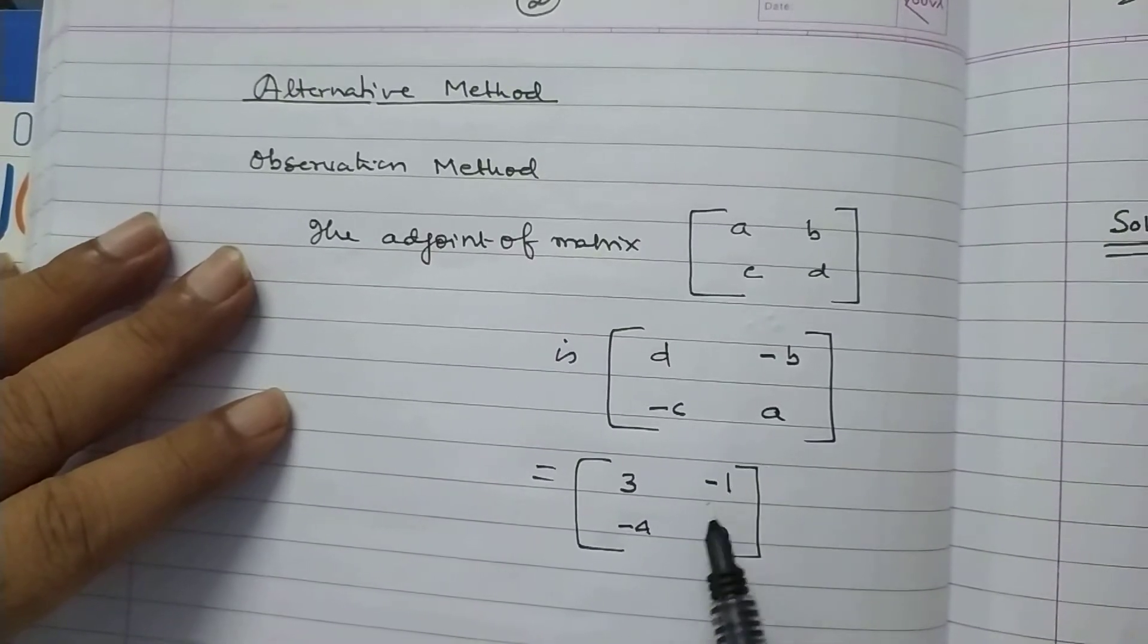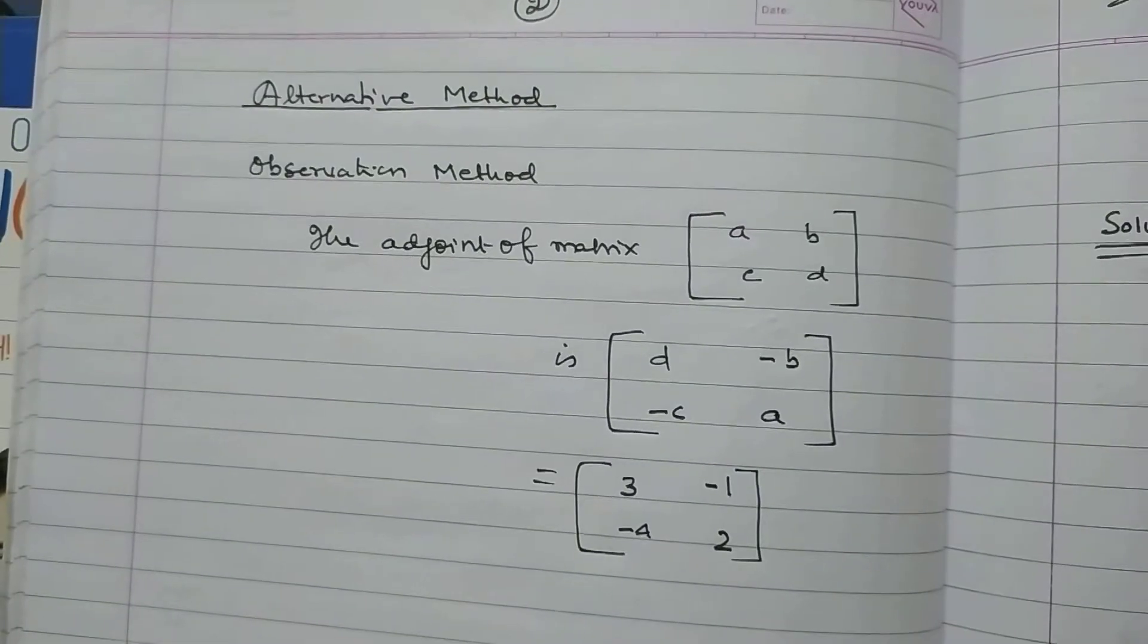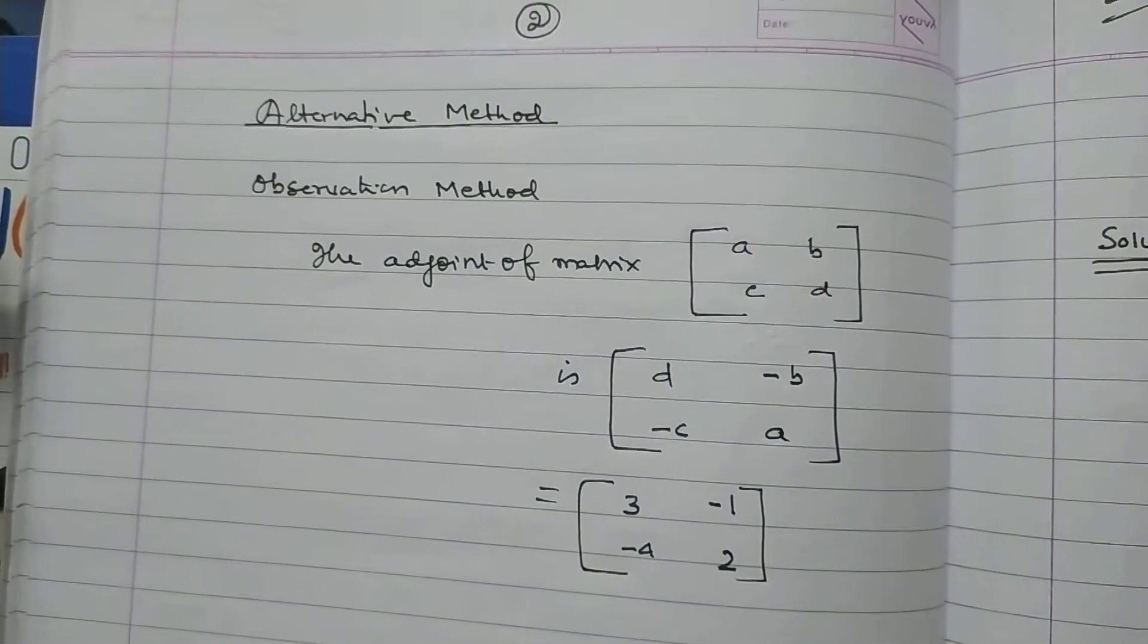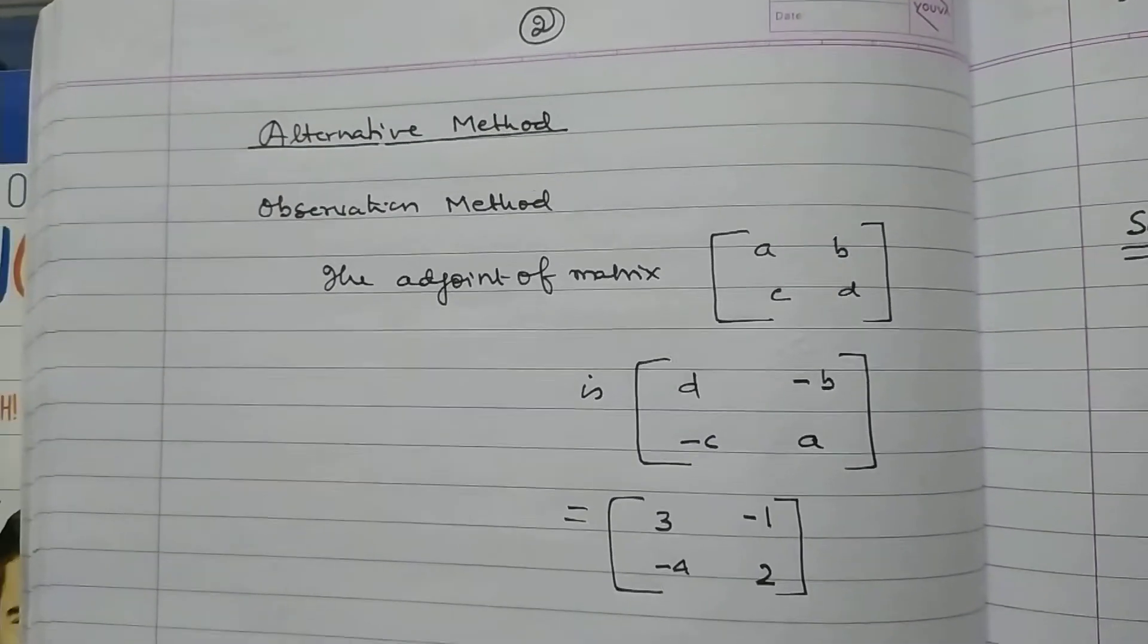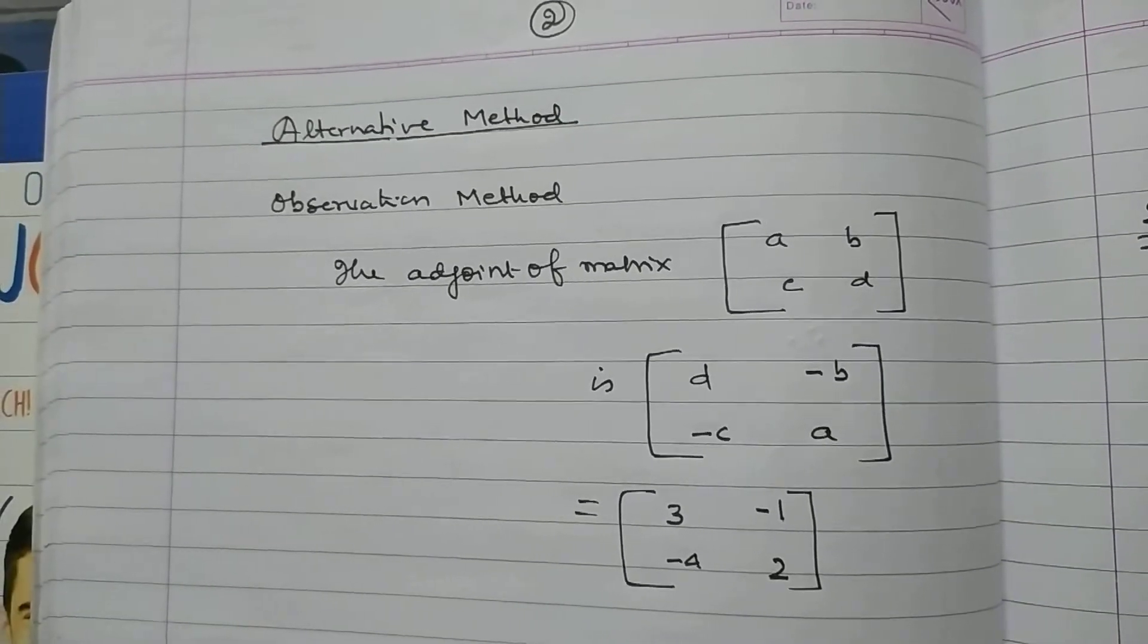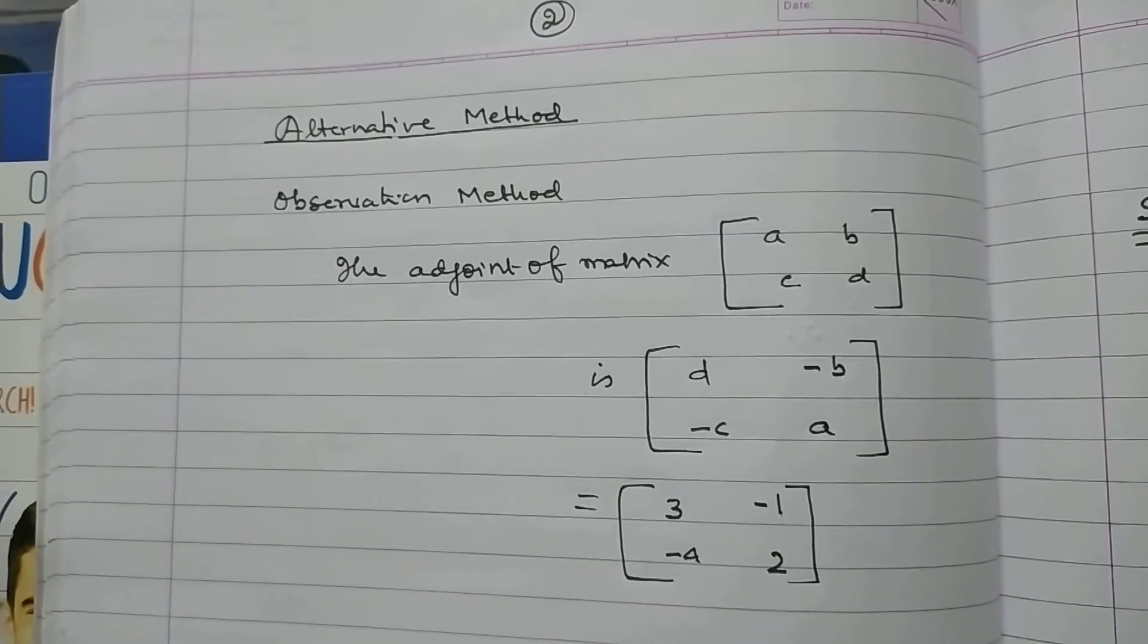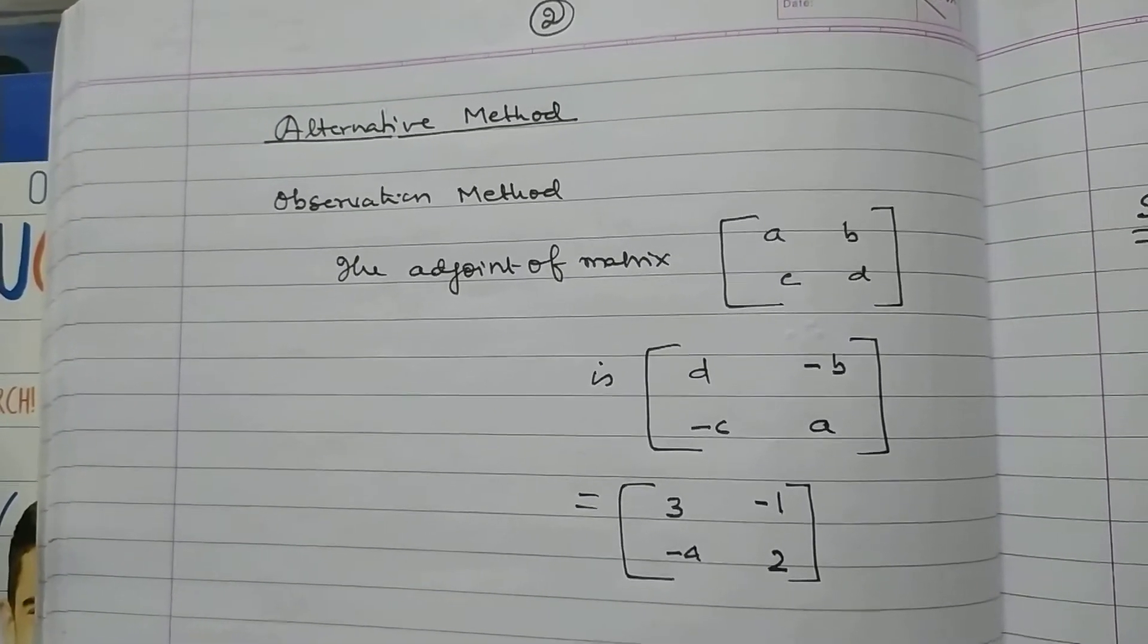So, it will be 3, minus 1, minus 4, 2. In this way, we can find the adjoint of a matrix. So, my dear students, now you can solve the problem by also alternative method. This problem is very, very important for the purpose of examination.